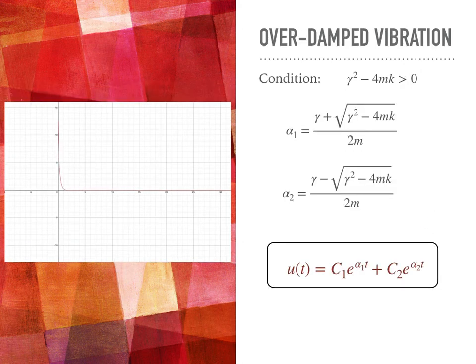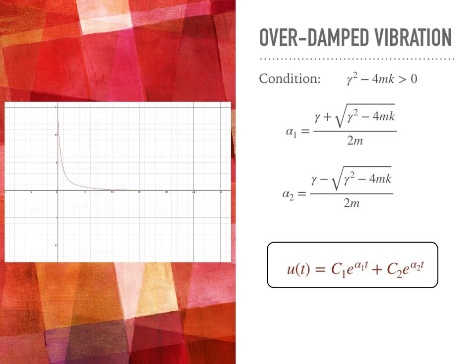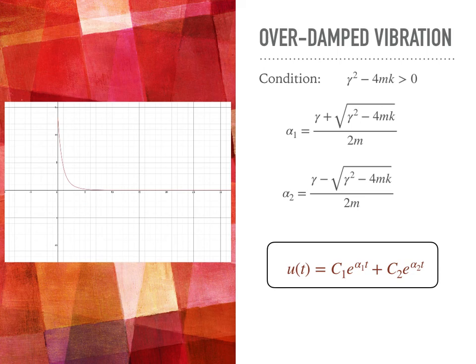Over-damped vibration occurs when you have two distinct real roots, so the position function is a combination of two exponential functions where both alpha₁ and alpha₂ are negative. In this case, the mass moves up slightly and then dies out immediately, going straight to the resting point without oscillating.